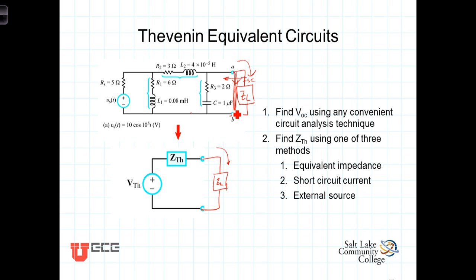We'll do an example using that. And the third method involves deactivating the source, any independent sources, applying an external source to the circuit terminals, and calculating the ratio of the voltage, that external voltage, to the current that then flows.